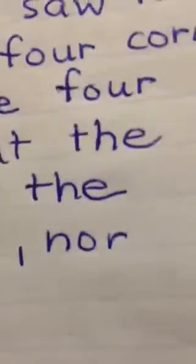And after these things, I saw four angels standing on the four corners of the earth, holding the four winds of the earth, that the wind should not blow on the earth, nor on the sea, nor on any tree.